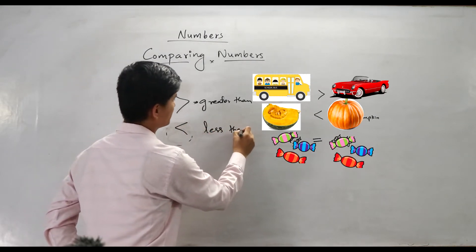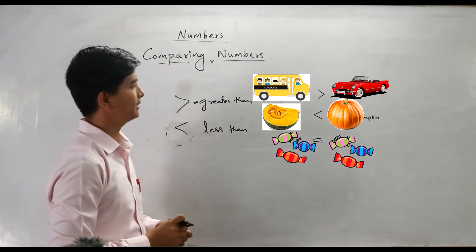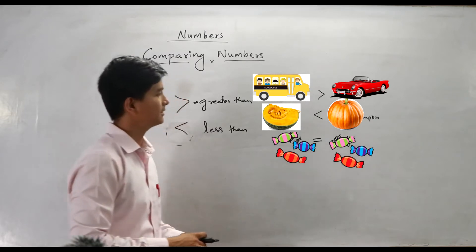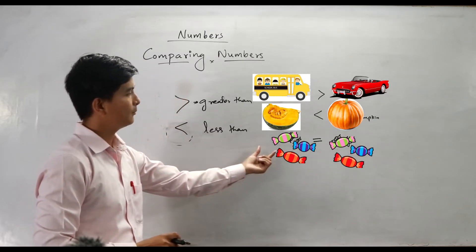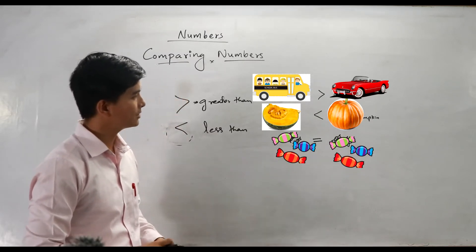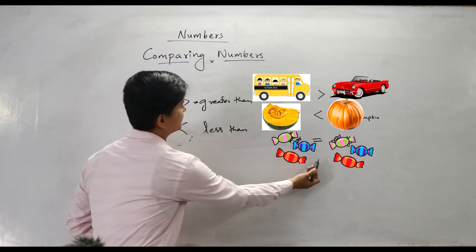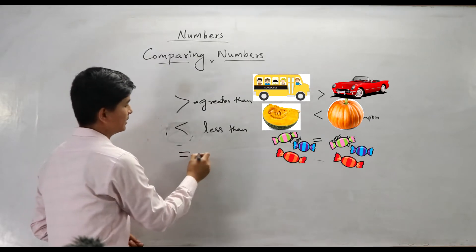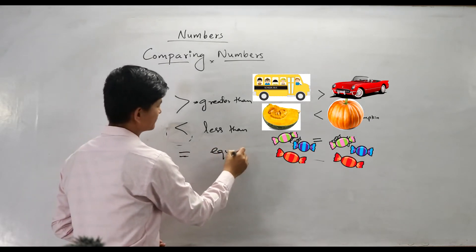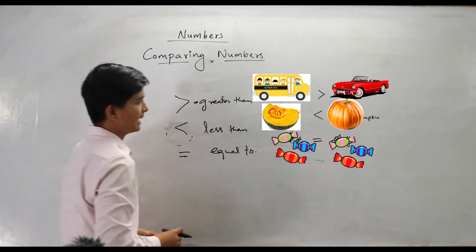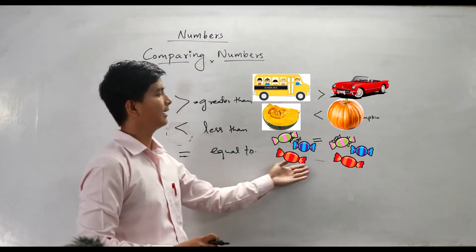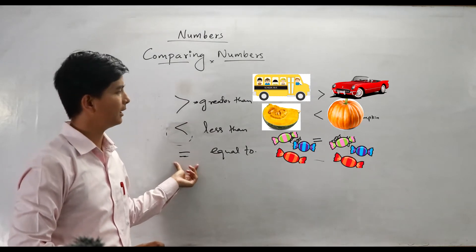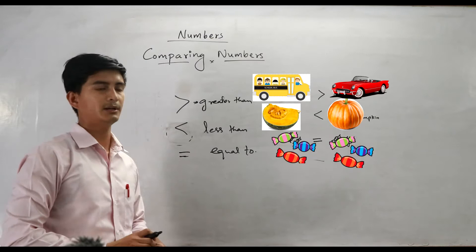We apply less than, which means that the small piece is less than the whole pumpkin. In the last picture you can see sweets — both have three sweets, so the symbol here is equal, which means that both the sweets have equal quantity. In the same way you can use these symbols with numbers.